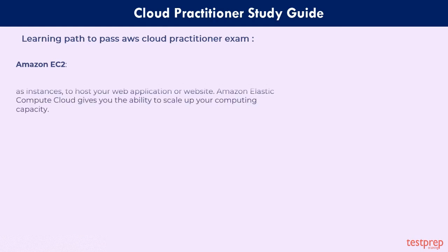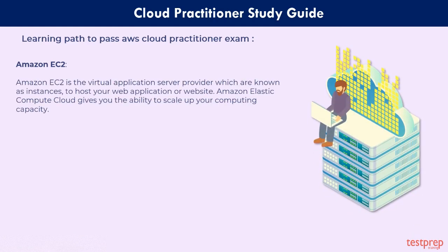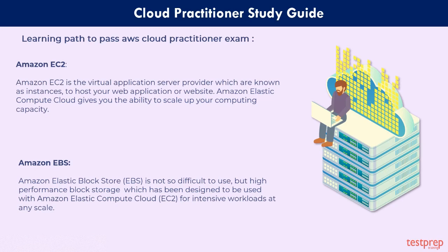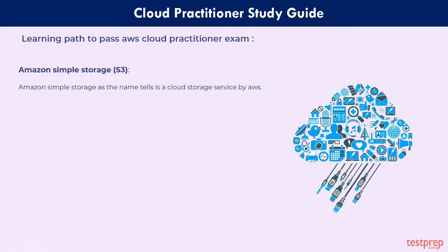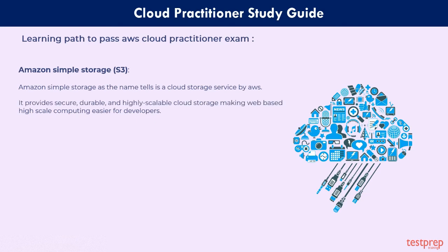Amazon EC2 is the virtual application server provider, known as instances, used to host your web application or website. Amazon EC2 gives you the ability to scale up your computing capacity. Amazon EBS is a high-performance block storage designed to be used with Amazon EC2 for intensive workloads at any scale. Amazon S3, or Amazon Simple Storage Service, is a cloud storage service by AWS that provides secure, durable, and highly scalable cloud storage, making web-based high-scale computing easier for developers.